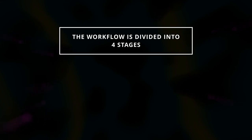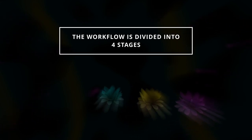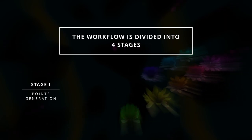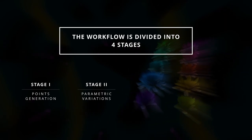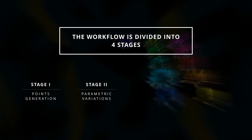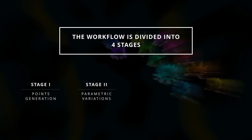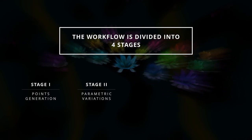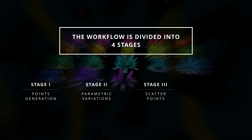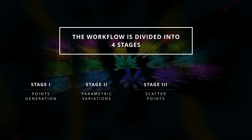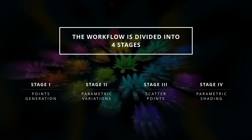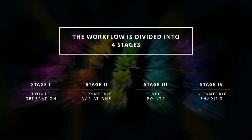The workflow itself is divided into four stages. First, we will generate a bunch of points. Then we will generate multiple parametric variations of the flower object on each of these points. Then we will scatter these variations at points of our choice. And lastly, we will do some parametric shading.